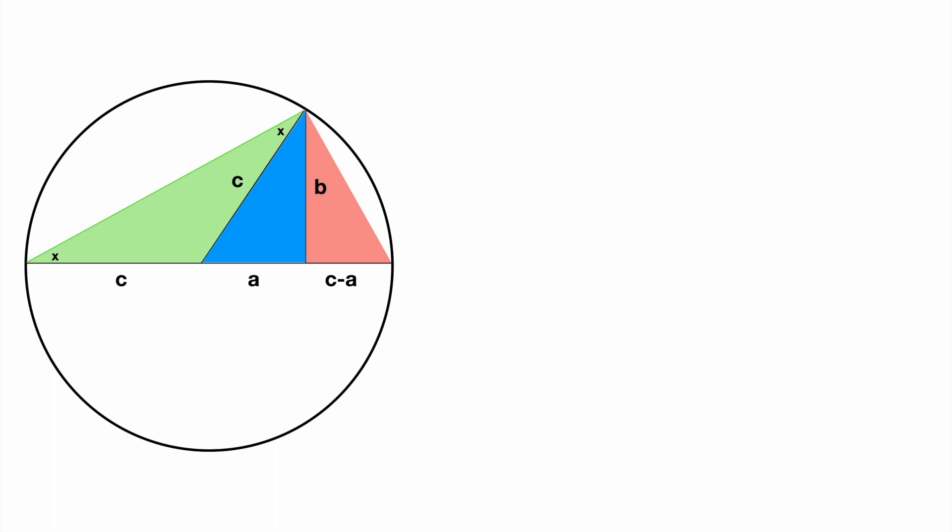Since we have two angles which we know about, we can use both of them to find the third one by subtracting them from 180. Doing this, we get the following, 180 minus 2x.